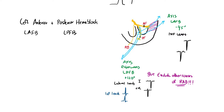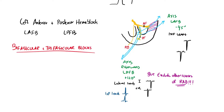Before diagnosing a left posterior fascicular block, make sure you exclude all other causes of right axis deviation, such as right ventricular hypertrophy or right ventricular strain caused by a PE. Now let's talk about bifascicular and trifascicular blocks. A bifascicular block is when there is blockage in two different places of the heart — most commonly in the right bundle branch and the left anterior fascicle.